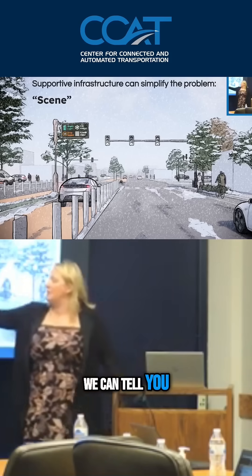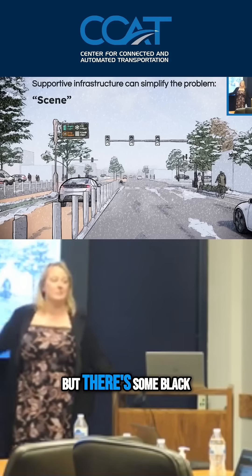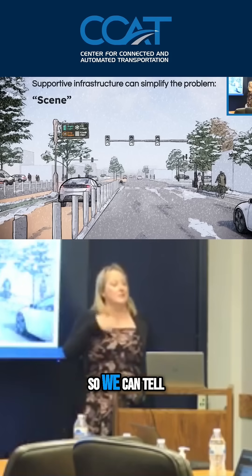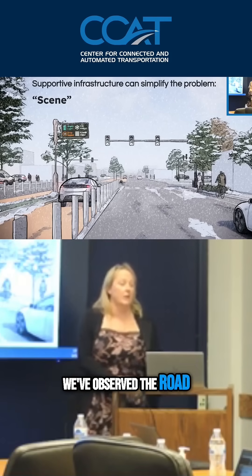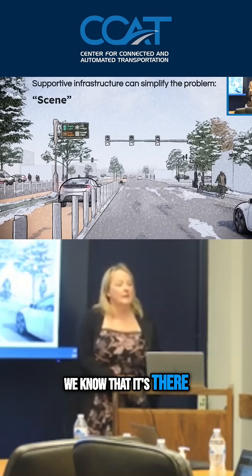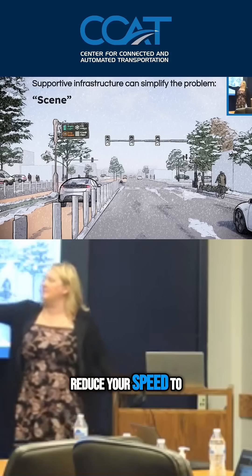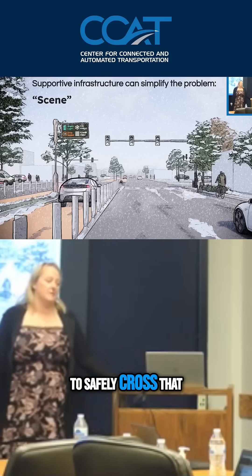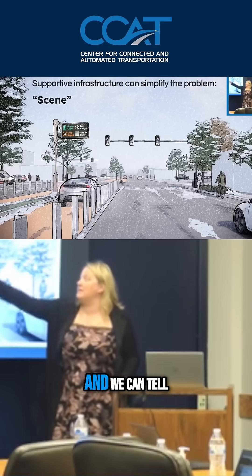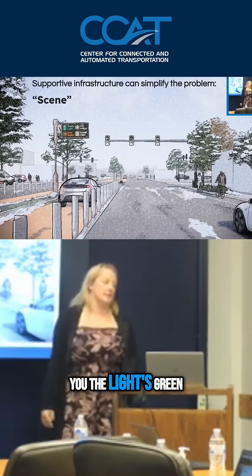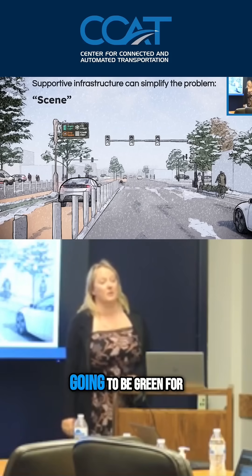We can tell you — you probably didn't notice this in the last image — but there's some black ice right there. So we can tell you there's black ice up ahead. We've observed the road, we know that it's there, and you should really reduce your speed to 15 miles an hour to safely cross that black ice. And we can tell you the light state — the light's green — and we can tell you how long it's going to be green for.